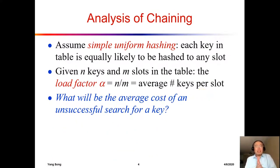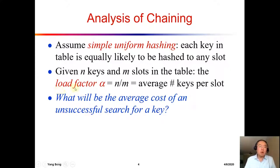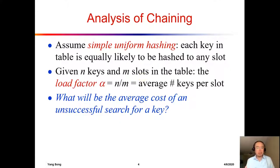So what is the performance of chaining? If we are doing chaining as our solution to collisions, do we still have constant access to data using a key? That is the part we want to pay attention to. To answer that, we first need to know the concept of load factor. The load factor is: if you have n keys or n nodes in the hash table and there are a total of m slots available, the load factor is n divided by m.